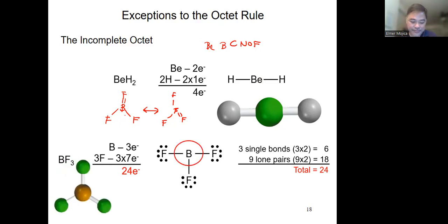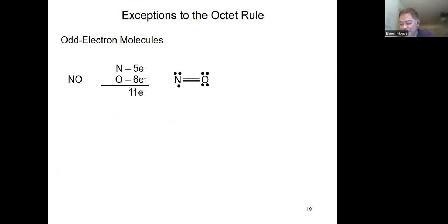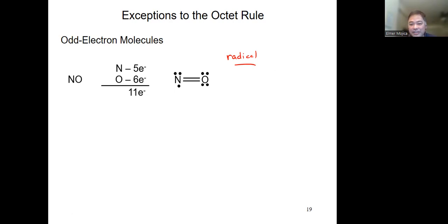Another exception is odd-electron molecules, also called radicals. These are molecules with an odd number of electrons and therefore cannot satisfy the octet rule. They are considered destructive molecules and are said to cause cancer.